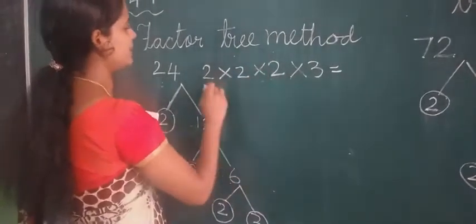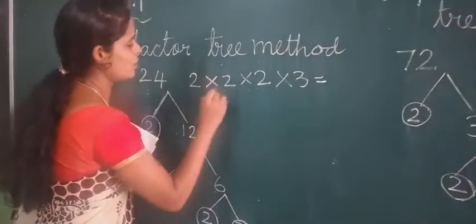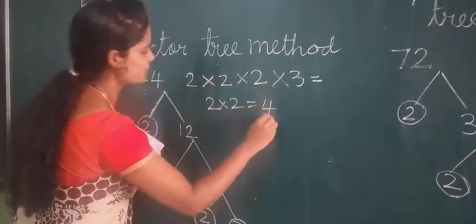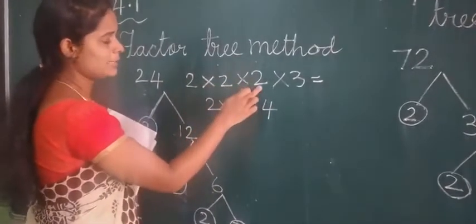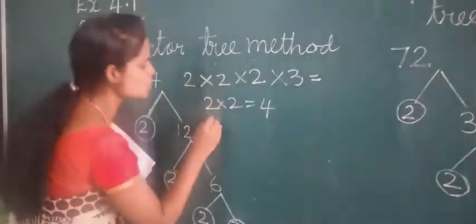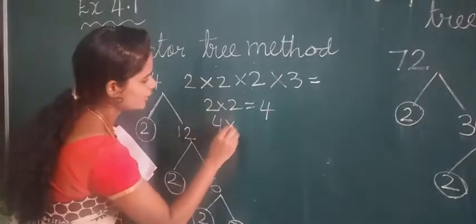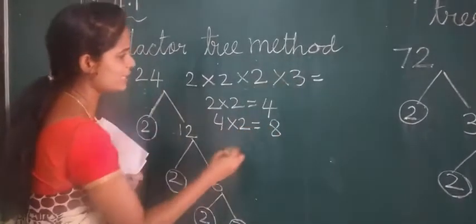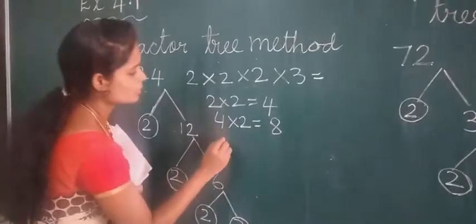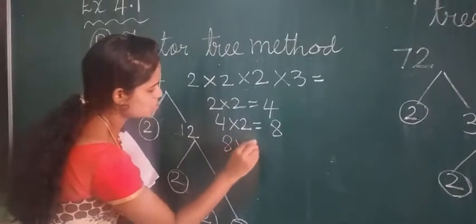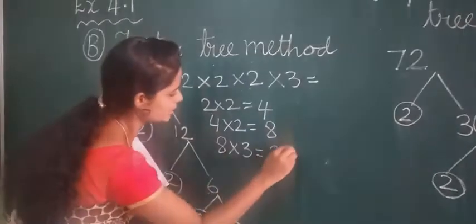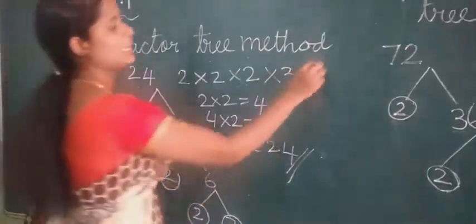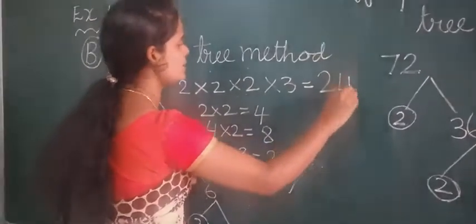So, I wrote it here separately. First, I will take this 2 number. 2 into 2, how much? 4. Then, 4 again into 2. 4 into 2, 8. Again, we have 3 there. 8 into 3. 3 8's are 24. Did we get 24? Yes. Write it here. 24. This is called factor tree method.